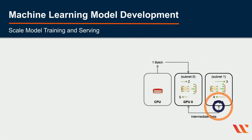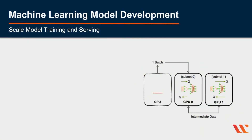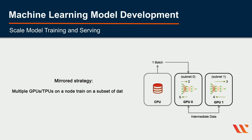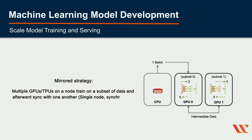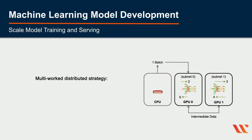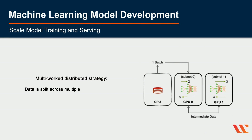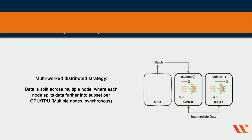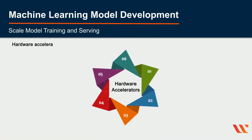To scale model training and serving, consider the Mirrored Strategy, which uses multiple GPUs and TPUs on a node to train on a subset of data and sync with each other — that is, single-node or synchronous mode. The Multi-Worker Distributed Strategy splits data across multiple nodes, where each node further splits the data into subsets per GPU or TPU, running in synchronous mode.